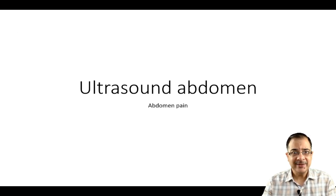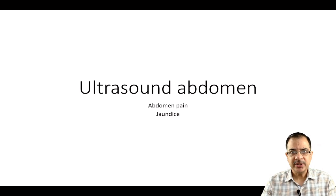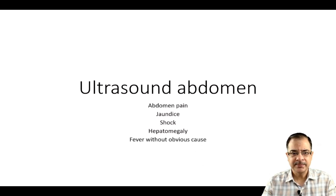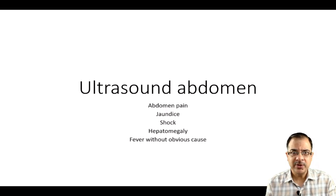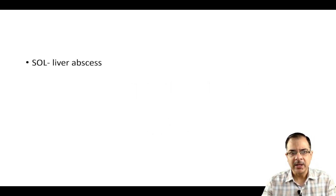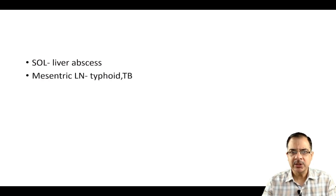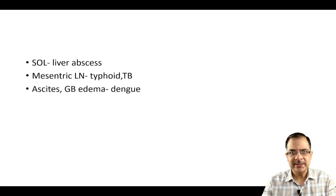Ultrasound of the abdomen should be ordered when the patient has severe abdominal pain especially localized to the right hypochondrial area, complaints of jaundice, is in shock, has hepatomegaly — especially tender hepatomegaly suggesting liver abscess — or has fever without any obvious cause. On ultrasound: space-occupying lesions are seen in liver abscess, mesenteric lymph nodes in typhoid and tuberculosis, and ascites with gallbladder edema in dengue fever.